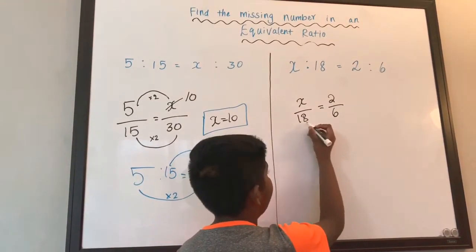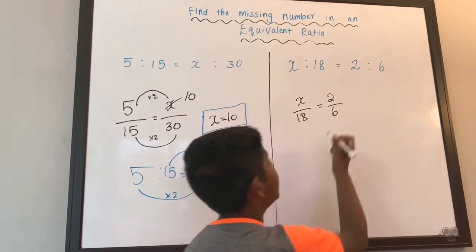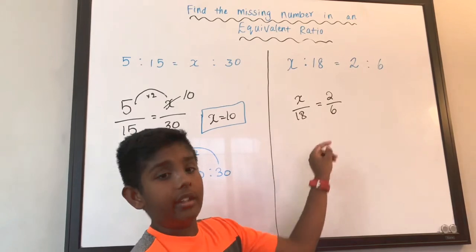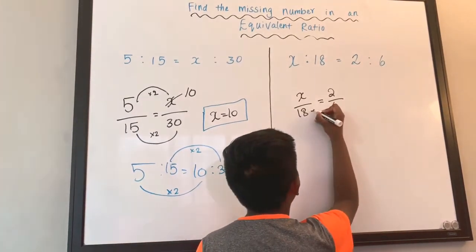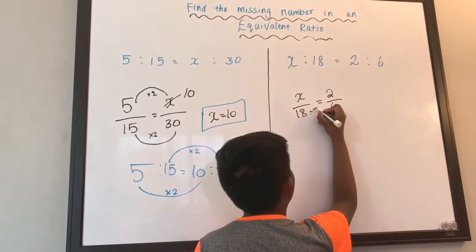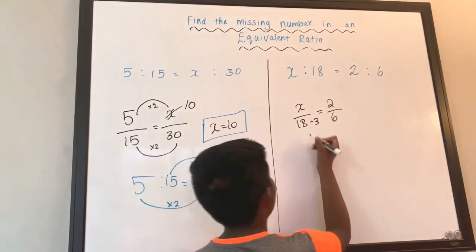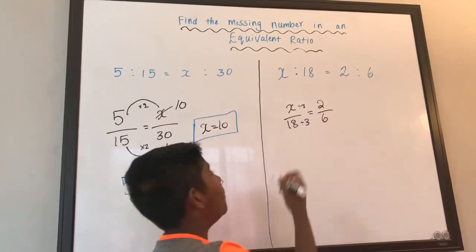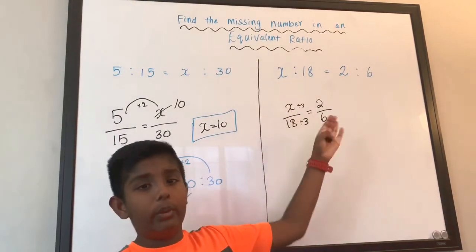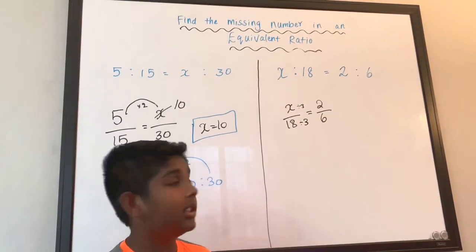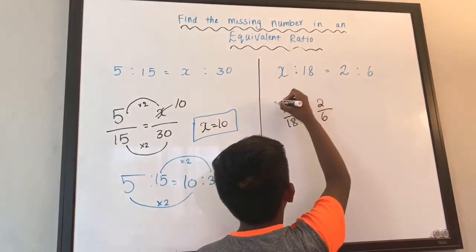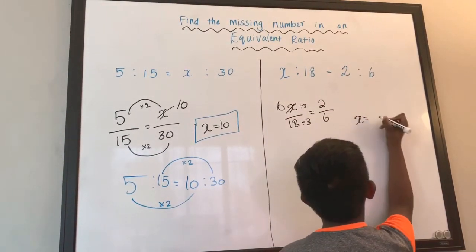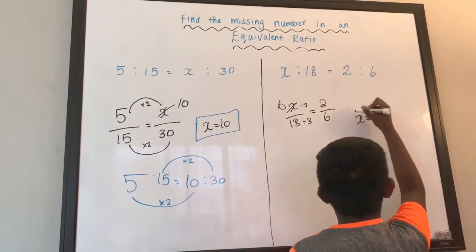So 18 turned into 6. So we can divide. So 18 divided by 3 equals 6. Now we're gonna do X divided by 3 equals 2. So what number divided by 3 will get 2? 6. So this X is going to be 6. And then our X value is going to be 6.